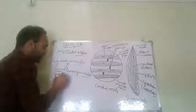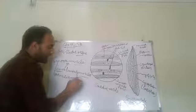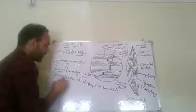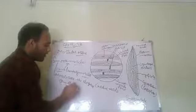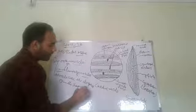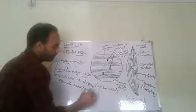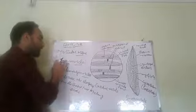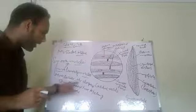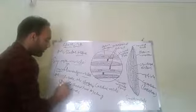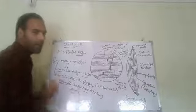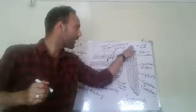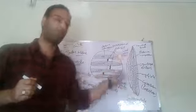The muscle cells present in smooth muscle are elongated, spindle-shaped, having tapering ends. I have shown the figure of this smooth muscle. These are the tapering ends and this is the spindle shape of this smooth muscle.